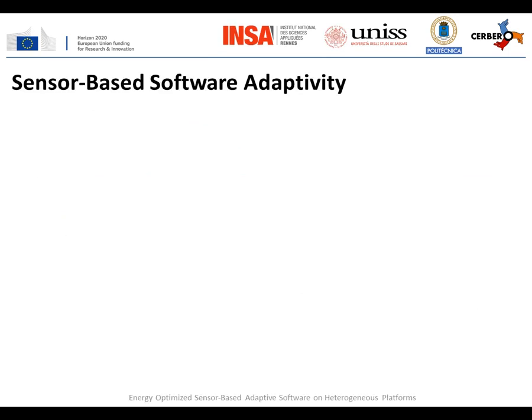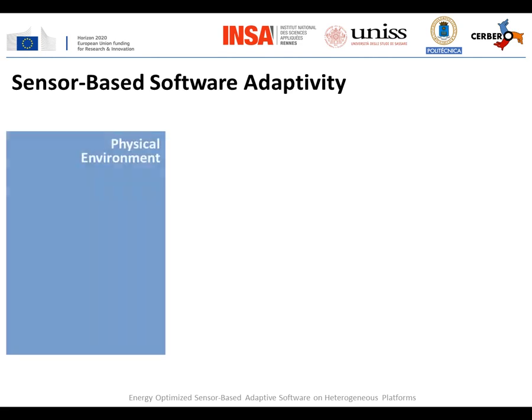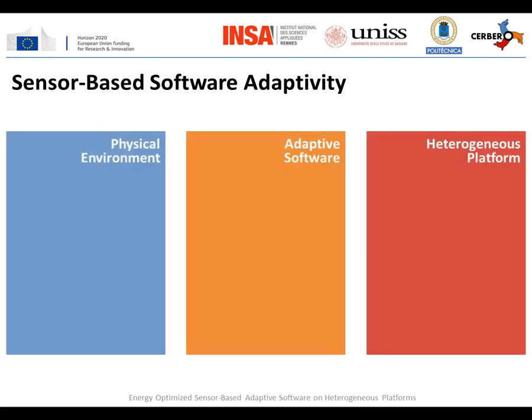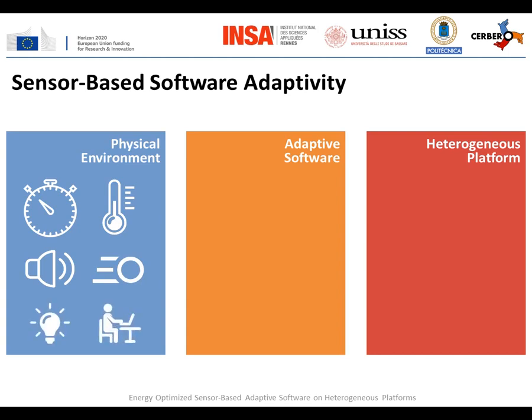A sensor-based adaptive cyber-physical system consists of three main components: a physical environment, an adaptive software, and a heterogeneous platform. The system interacts with its environment through a set of sensors that capture physical properties. Typical properties measured by such sensors include time, temperature, sound, motion, light, and user interface.